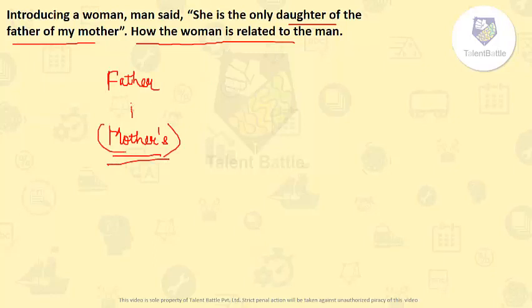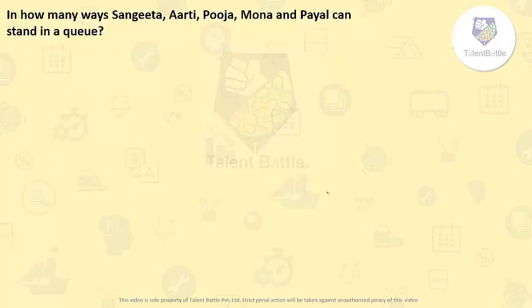Because the father is having only one daughter and he is saying that she is the only daughter. So the woman is related to the man as his mother. The answer is mother.